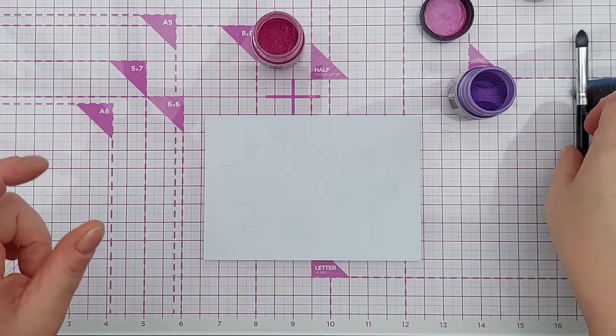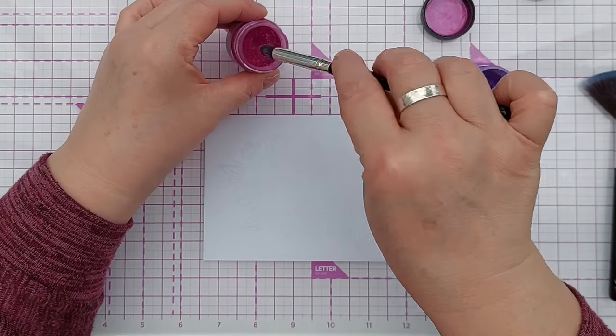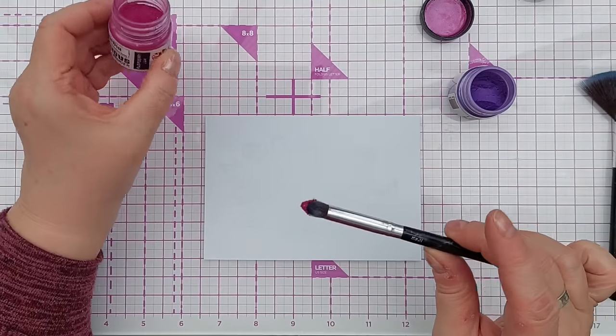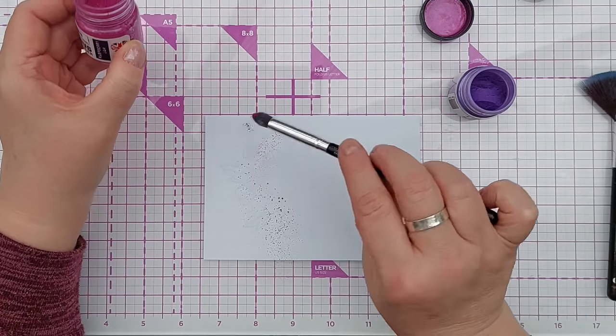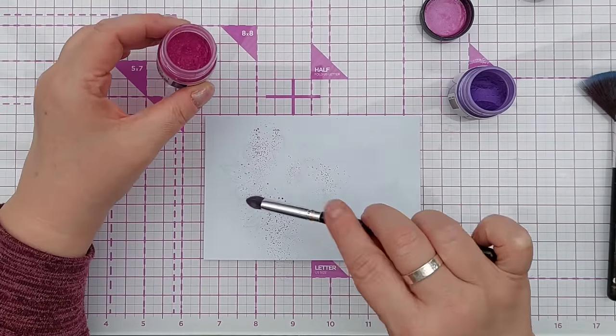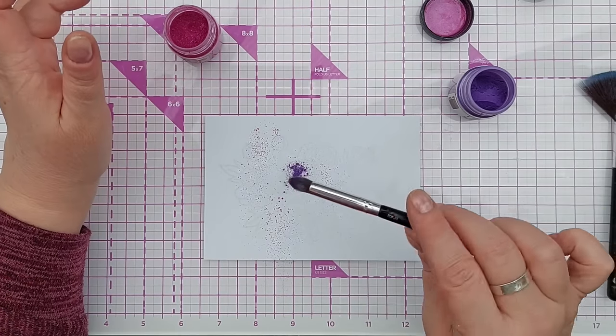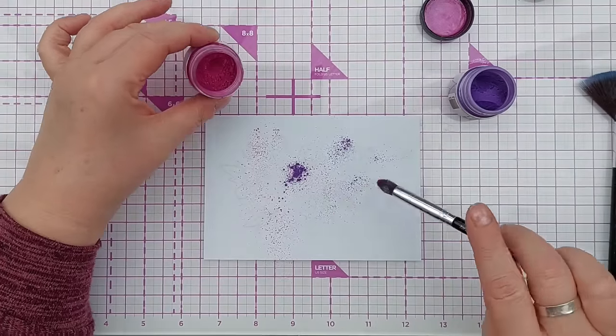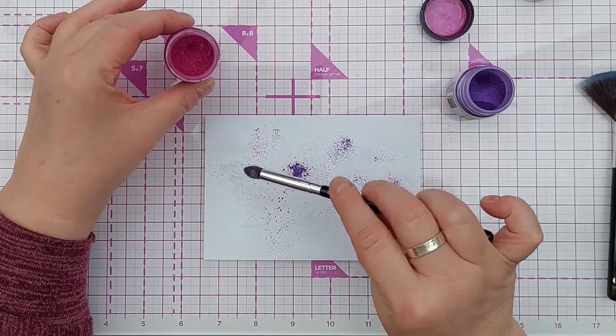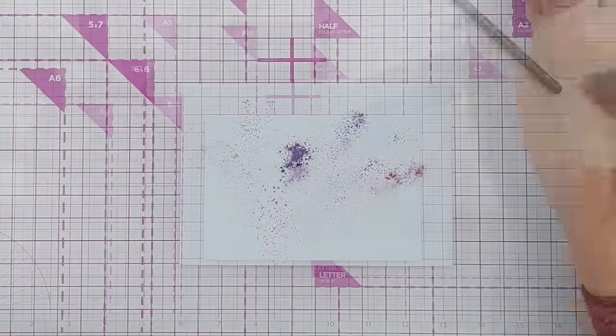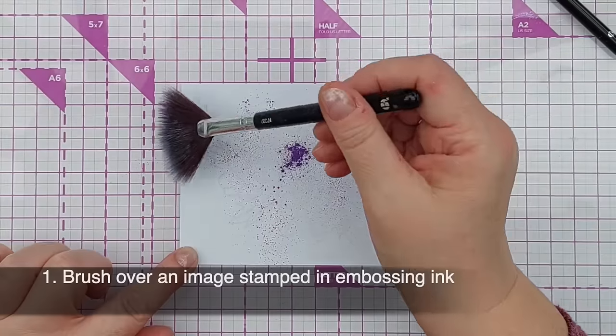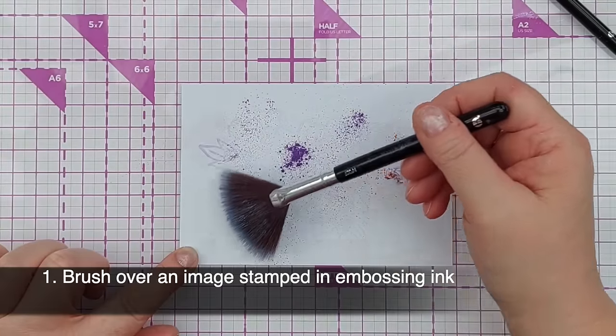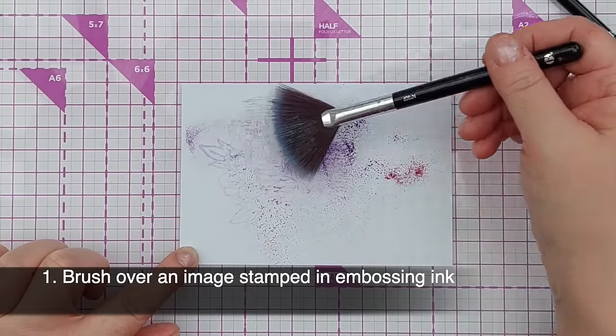And now I'm going to take some pigment powder. This is Luscious Powder in Raspberry Jam and tap that over. And now some purple. Whoops, that's quite a lot.